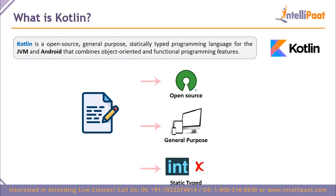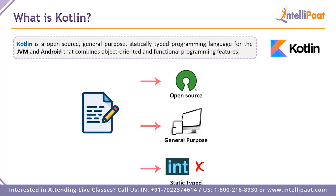What is Kotlin? To give you a quick definition, Kotlin is an open-source, general-purpose, statically typed programming language for use with the Java Virtual Machine and Android. It helps combine object-oriented models and functional programming models as well. This is the biggest advantage that Kotlin gives us as a programming language.